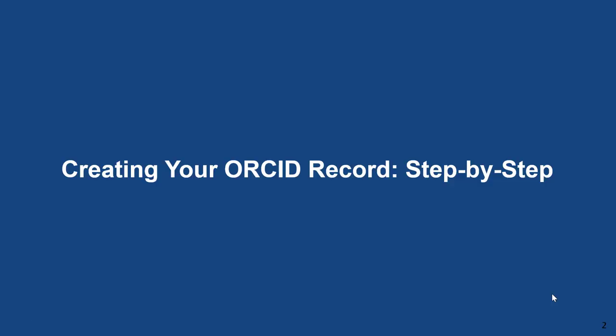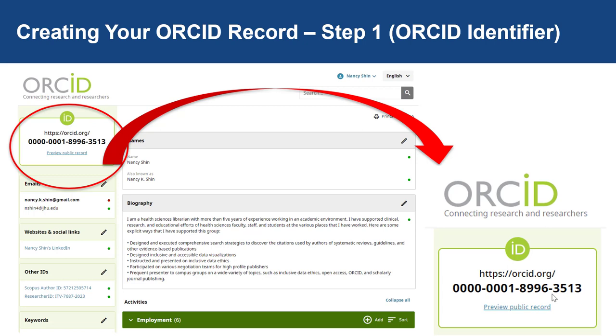Today I'm going to walk you through creating your ORCID record using my ORCID record as an example. The first step of creating a complete ORCID record is locating your unique 16-digit identifier on the ORCID page for yourself. Here, it is located on the top left-hand corner of the ORCID page.